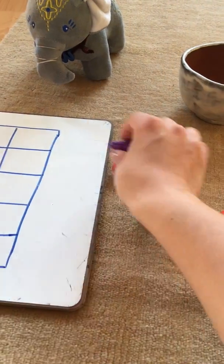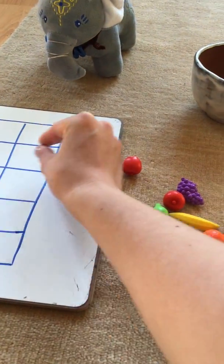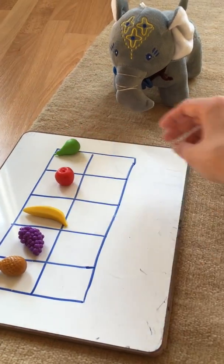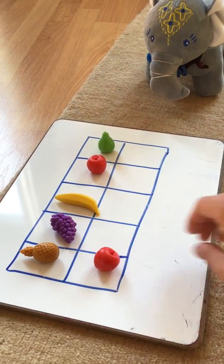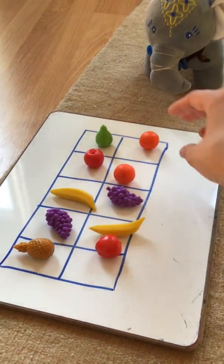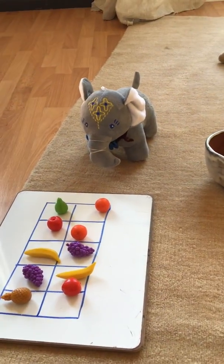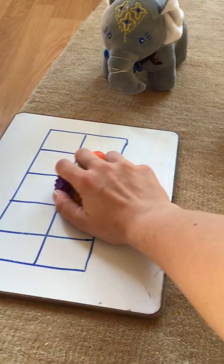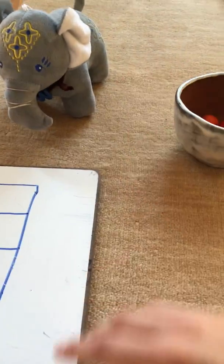So I put them on my 10-frame to make sure that I had 10. One, two, three, four, five, six, seven, eight, nine, and ten. So I knew that I'm giving Mabel 10 pieces of fruit, and I said, okay, you can put them in your bowl and save them for lunch.